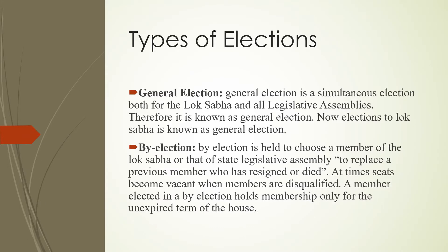Types of election. The first type is a general election. A general election is a simultaneous election for both the Lok Sabha — the Union Parliament — and the legislative assemblies in the states. Therefore, elections to the Lok Sabha and the legislative assemblies are known as general elections.